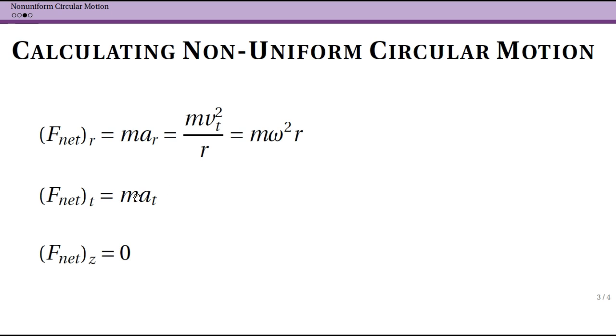On the other hand, we now have a non-zero term here. So if your acceleration in the tangential direction is zero, then you have uniform circular motion. If you have a non-zero term here, then you have non-uniform circular motion, and again this is causing your object to speed up or slow down.